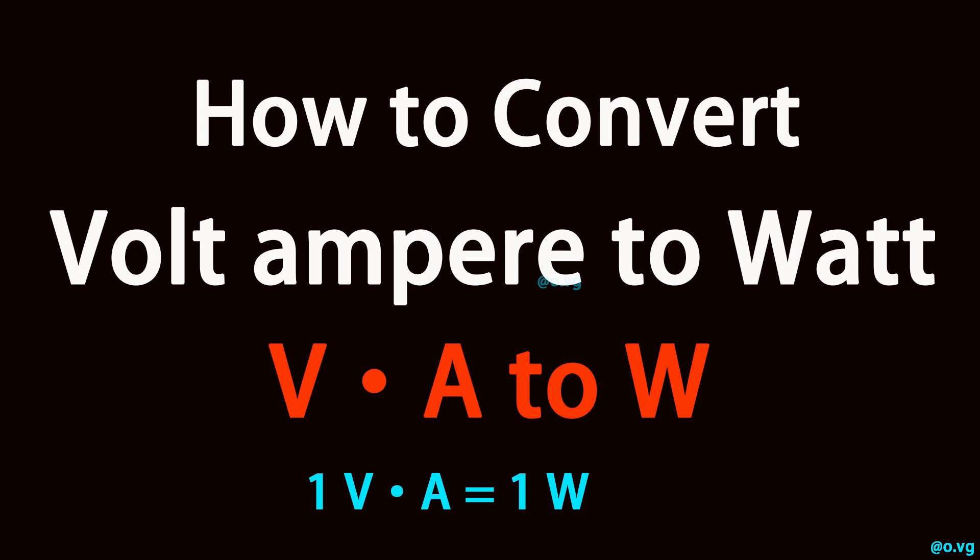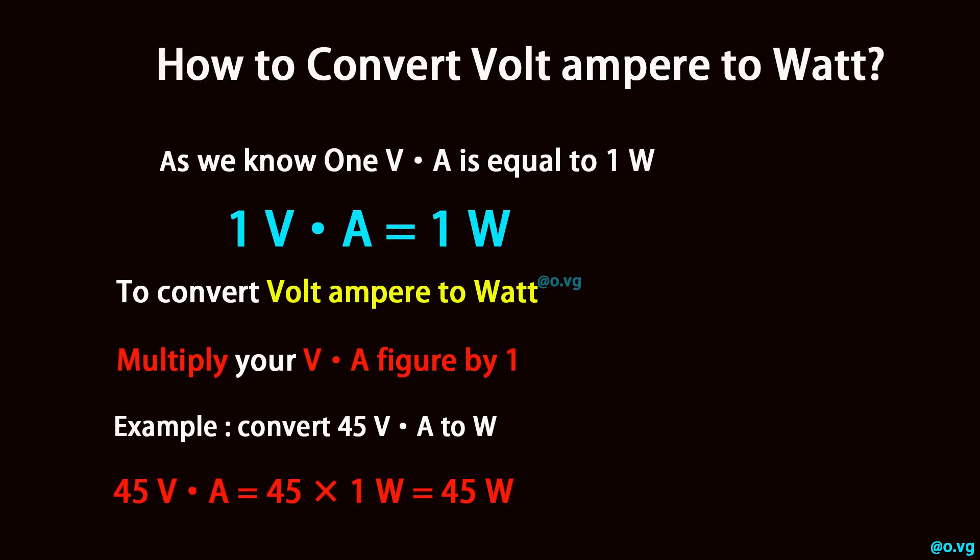How to convert volt-ampere to watt. 1 volt-ampere is equal to 1 watt. To convert volt-ampere to watt, multiply your volt-ampere figure by 1.